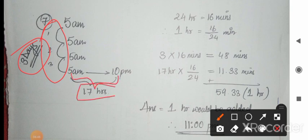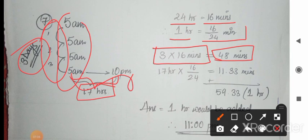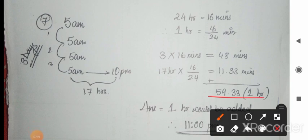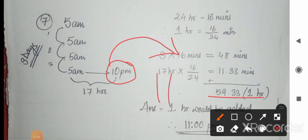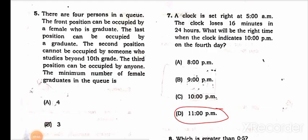In 24 hours the clock loses 16 minutes, so in three days it loses 48 minutes. For the remaining 17 hours, it loses 16 divided by 24 multiplied by 17, which is approximately 11.33 minutes. Adding both: 48 plus 11.33 is approximately 59.33 minutes, roughly one hour. Since the clock shows 10 PM but has lost one hour, the correct time is 11 PM. So 11 PM is the right answer.